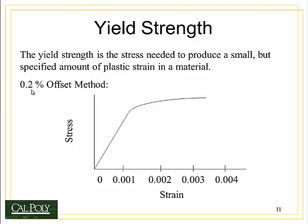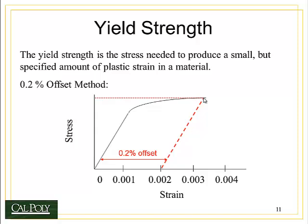Here's how the method works. First, you find the .2% offset on the x-axis, or the strain axis. Remember, .2% is equal to .002 strain. So we find .002 strain on the x-axis. Then we draw a line called an offset — an offset means parallel to but shifted from. So our line is going to be parallel to the elastic portion of the curve but shifted over .002 strain. There's the .2% offset. We draw the line as parallel to the elastic portion of the curve as we can, and where it intersects the stress-strain curve becomes the yield strength. We draw a line over to the y-axis and label that as the yield strength.